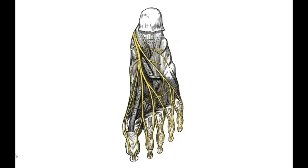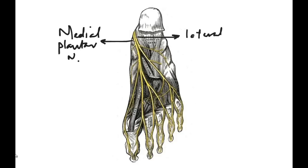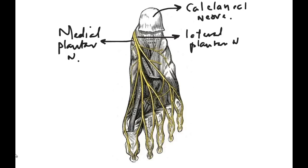Looking at the plantar surface of the foot, this diagram shows the medial plantar nerve and the lateral plantar nerve. The lateral plantar nerve supplies the lateral one and a half to three and a half toes, whereas the medial plantar nerve supplies the medial three and a half toes.